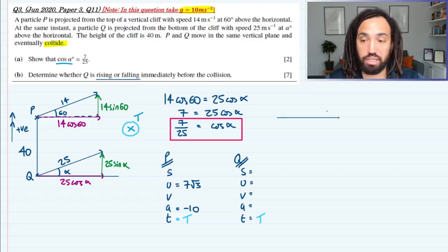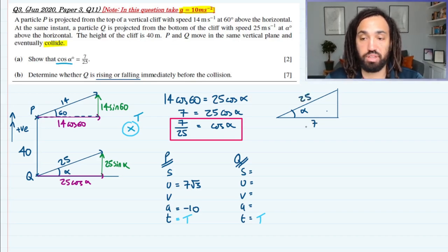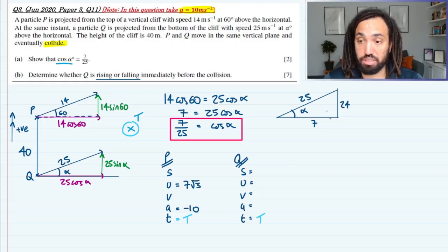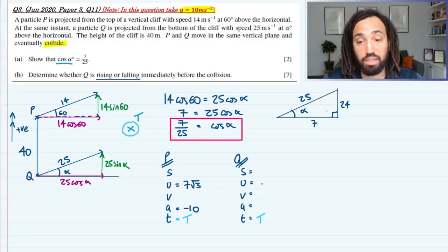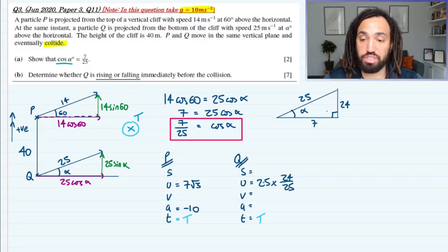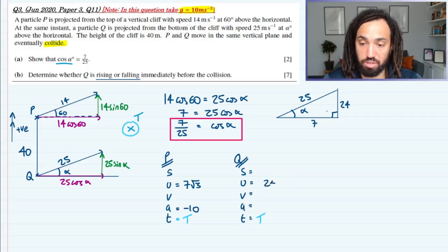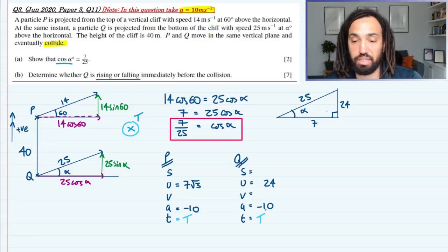So let's just do a quick triangle to work out sin alpha, because we know that cos alpha, which is the adjacent over the hypotenuse, is 7 over 25. We can then do Pythagoras's theorem, and that would tell us that this is 24. So sin alpha is 24—it's the opposite, 24 over the hypotenuse 25. So this is 25 sin alpha, and sin alpha is 24 over 25, so this is just simply 24. And again, the acceleration in the vertical is always going to be minus 10 in this case.